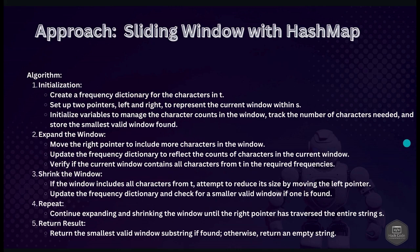Here is the detailed description of the algorithm. First, initialization: create a frequency dictionary for characters in T, use two pointers left and right to represent the current window in S, and initialize variables to track the current window's character counts, the number of required characters, and the minimum window found. Second, expand the window: move the right pointer to expand the window and update character counts. Check if the current window contains all characters of T with required frequency. Third, shrink the window: if the current window contains all characters of T, try to shrink by moving the left pointer, updating counts and minimum window size. Repeat until the right pointer reaches the end of S, then return the result.